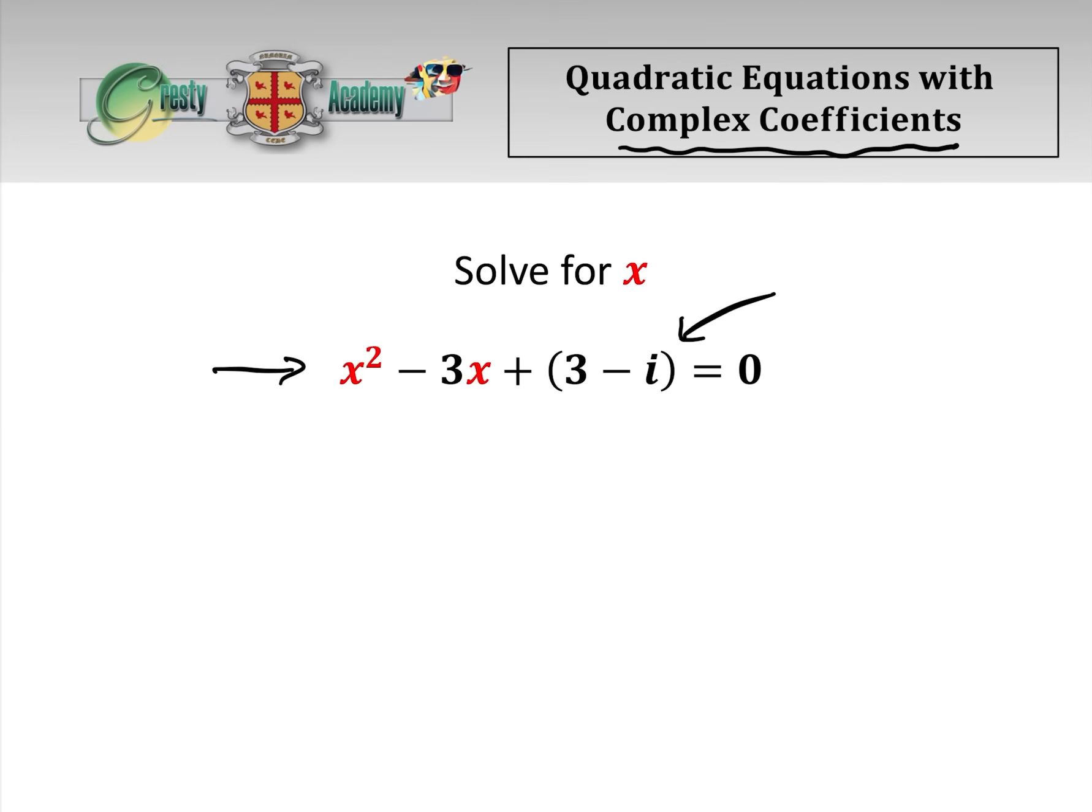Now the nice thing about this is that we're going to use a trick that we've used before, which is a square root under a square root in order to solve this. So let's get going. First of all, let's use the quadratic formula: x equals minus b plus or minus the square root of b squared minus 4ac all over 2a. So easy so far. And let's plug this in.